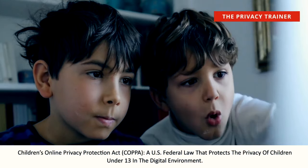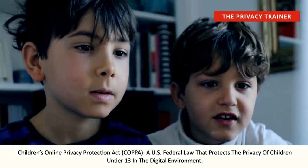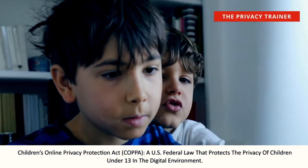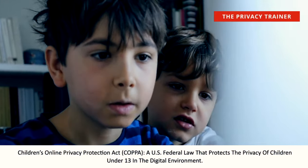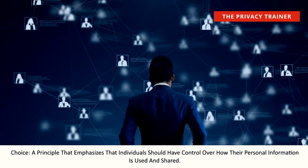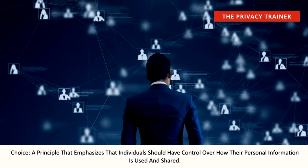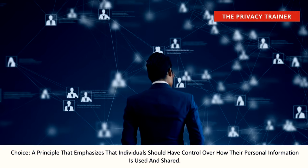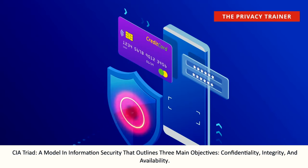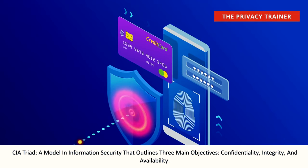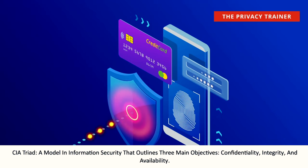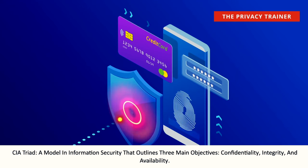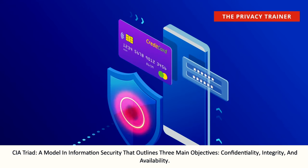Children's Online Privacy Protection Act, COPPA. A US federal law that protects the privacy of children under 13 in the digital environment. Choice. A principle that emphasizes that individuals should have control over how their personal information is used and shared. CIA Triad. A model in information security that outlines three main objectives: confidentiality, integrity, and availability.